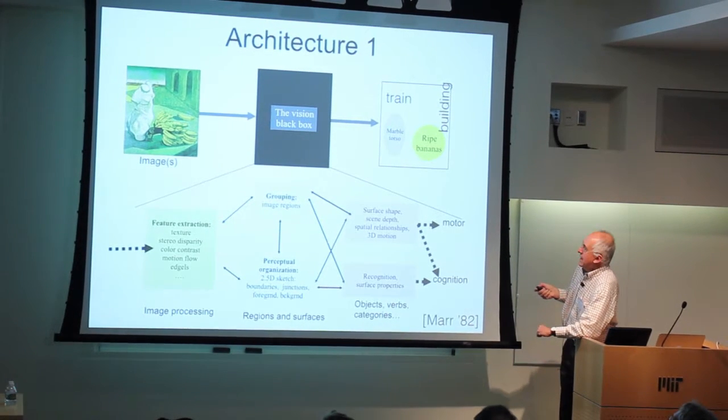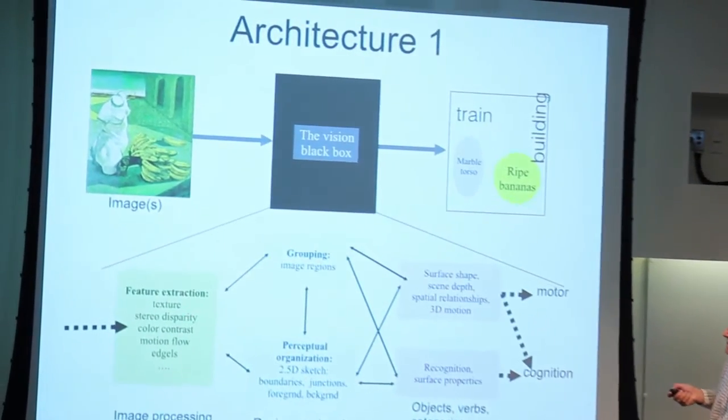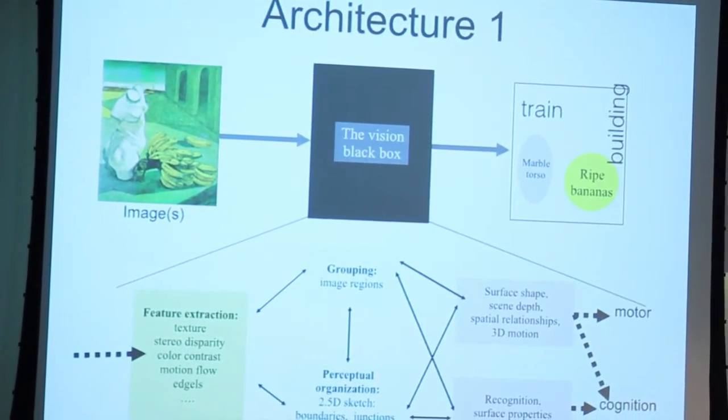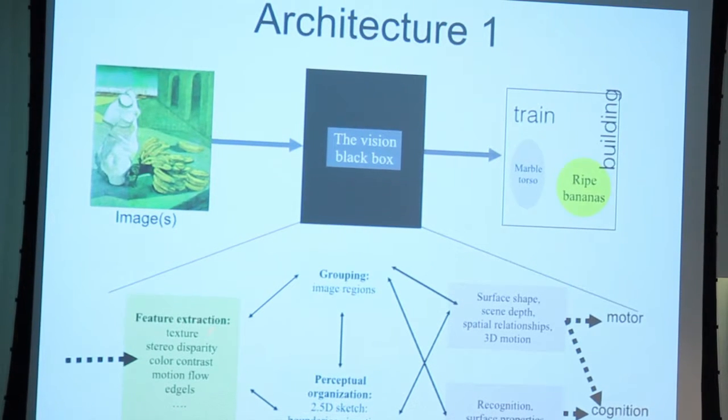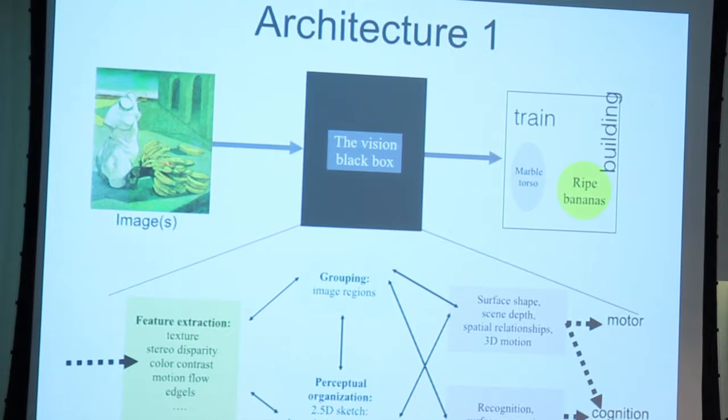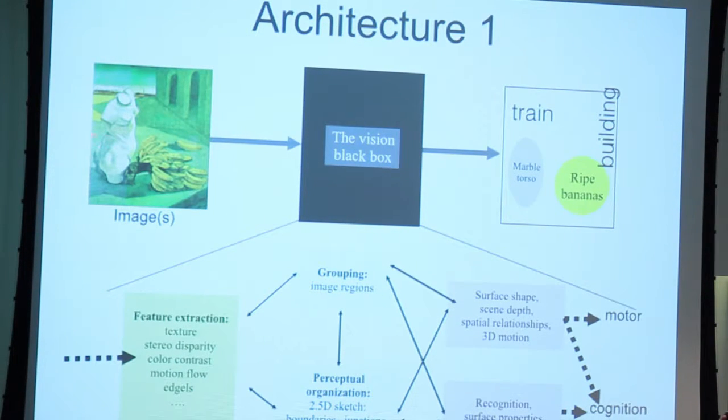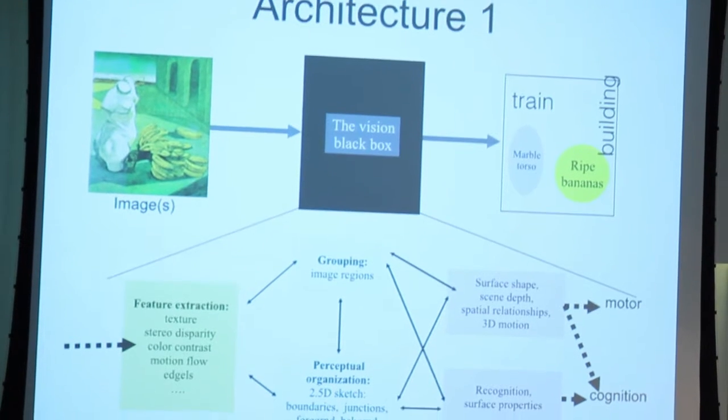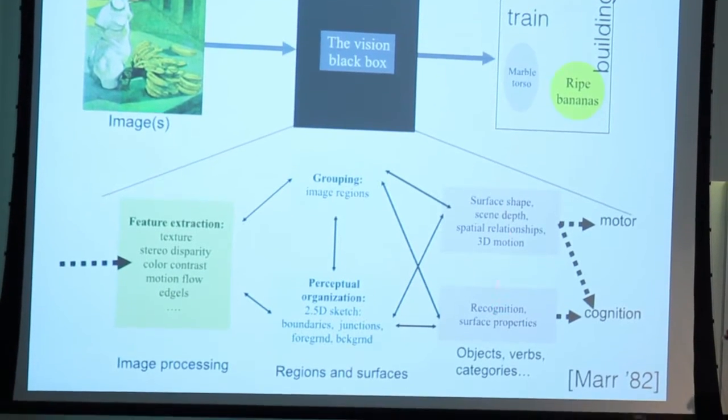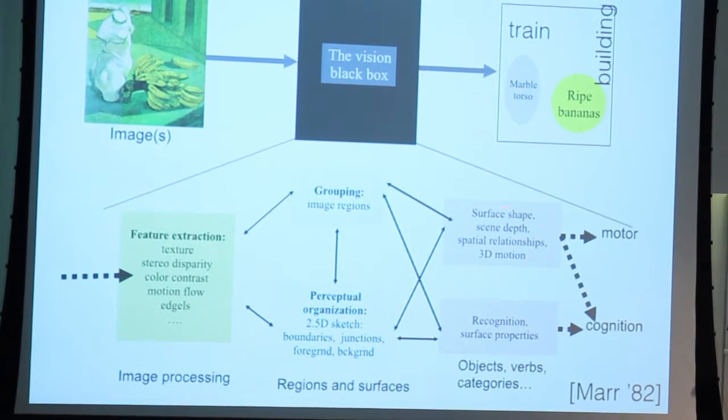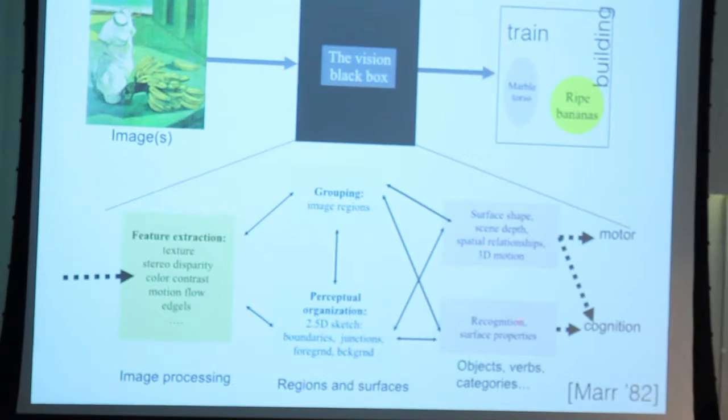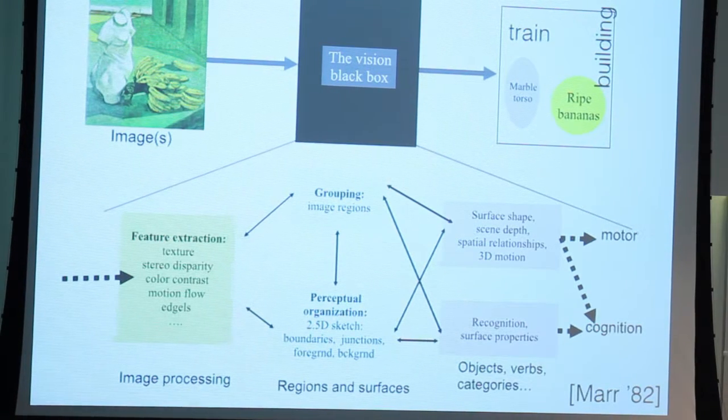As engineers, this would be an updated version of what David Marr would have said. There are stages, and we have to recognize the fact that there is an early visual system that extracts features from images. Hopefully those features are more informative than just pixel values. If you try to do too much and do recognition off the bat, you may not be so successful. You extract some intermediate or early representations. Through grouping and perceptual organization, you figure out what goes with what. You can extract shape and distances and trajectories. You can recognize objects and surface properties and materials, and entire scenes.